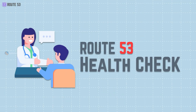Sometimes your website or application can crash or become unavailable, which is super frustrating for users. AWS Route 53 health check is a feature that helps prevent that by checking the health and availability of your servers and other resources. You set up these health checks to ping your resources periodically and make sure they're working properly. If a resource fails, Route 53 can automatically stop sending traffic to it and redirect traffic to a healthier resource.